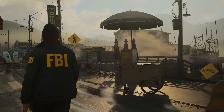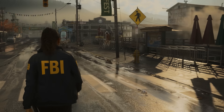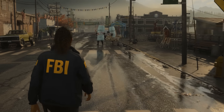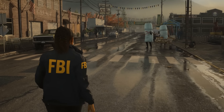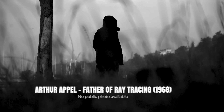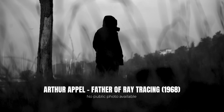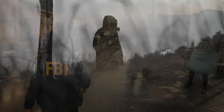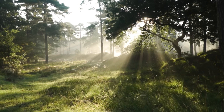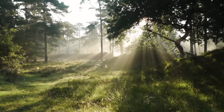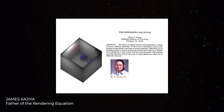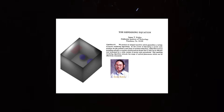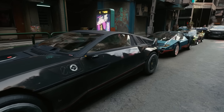Rendering — the process of turning data into a visual image — has been around since the earliest days of computer graphics. Back in 1968, a man named Arthur Appel created one of the first ray tracing techniques at IBM. It was groundbreaking. For the first time, computers were asked to simulate how light behaves. Then in 1986, James Kajiya introduced something even deeper: the rendering equation. And from that, path tracing was born. This was light simulation on a whole new level.